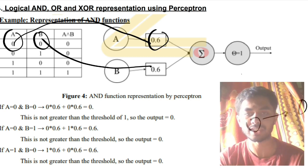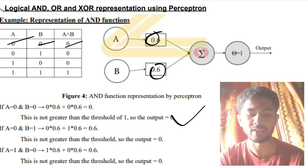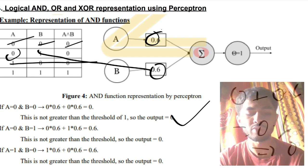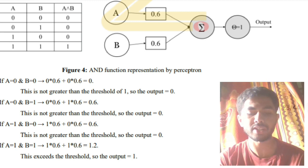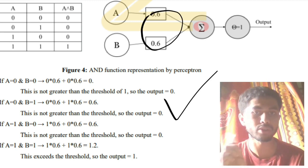If the computed value is less than 1, the output is 0; if it is greater than or equal to 1, the output is 1. Check: 0×0.6 + 1×0.6 = 0.6 — less than 1, so output is 0. You check all instances this way. If the outputs match the truth table, those are the correct weights. If they do not match, you apply a formula to find the correct weights.